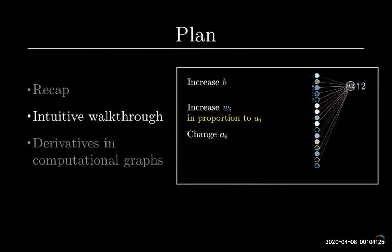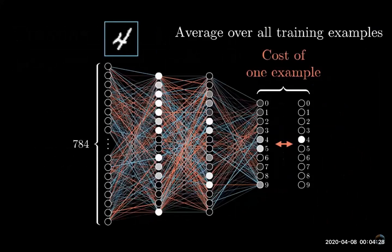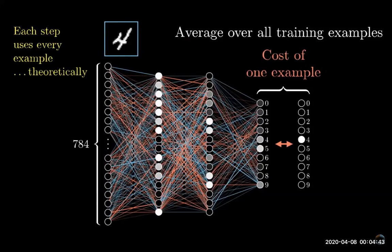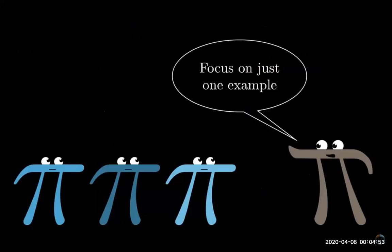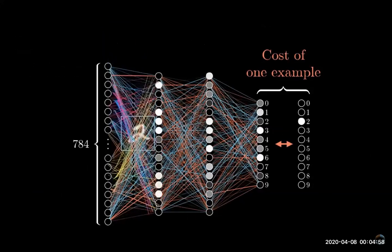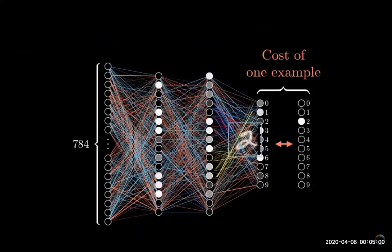I'm gonna start things off here with a complete disregard for the notation and just step through the effects that each training example is having on the weights and biases. Right now all we're gonna do is focus our attention on one single example, this image of a two. What effect should this one training example have on how the weights and biases get adjusted?